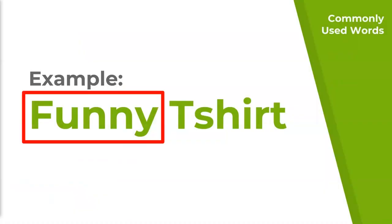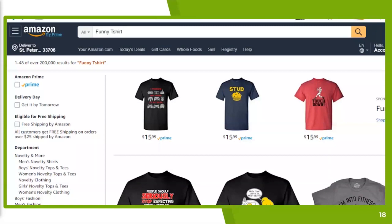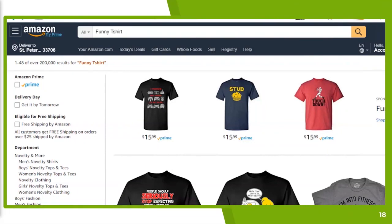In this example, we're using 'funny' as the commonly used word with t-shirts as the product. 'Funny' is an overly used word — if you're creating listings, I'd almost avoid it because you get lumped in with a lot of competition. But it helps us a lot when doing research: when we search 'funny t-shirts' on Amazon, there are 200,000 results. I don't want my shirt showing up there, but as a researcher, it's an amazing opportunity to see what trends are working.